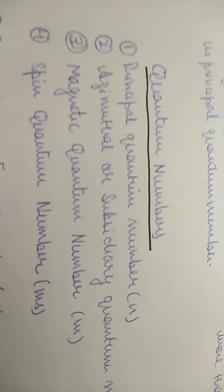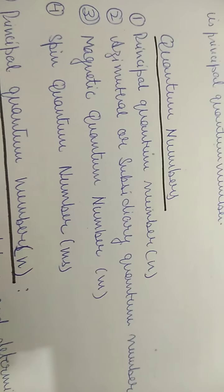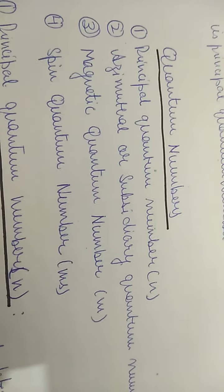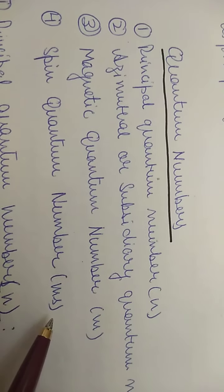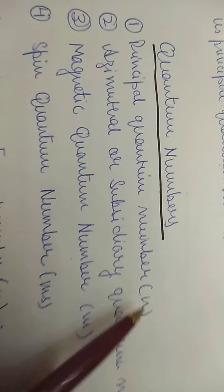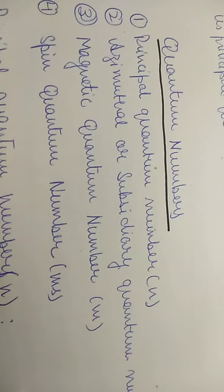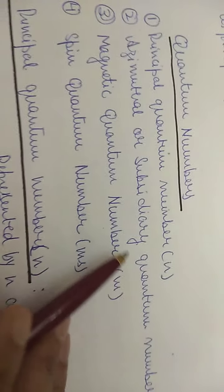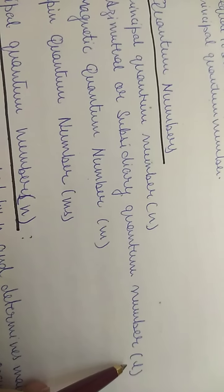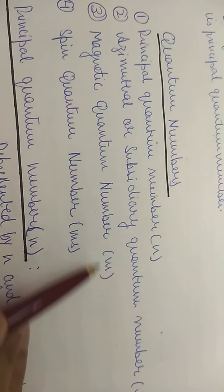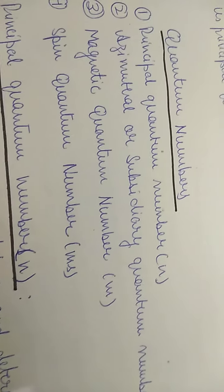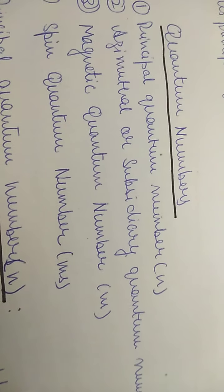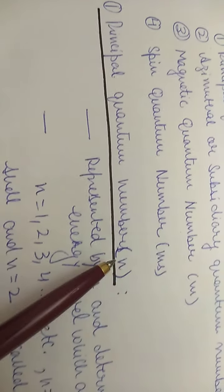When the Schrödinger wave equation is solved, we get wave functions and quantum numbers. We have 4 quantum numbers to define an electron: the principal quantum number (n), the azimuthal or subsidiary quantum number (L), the magnetic quantum number (M), and the spin quantum number (Ms). We will now go through each of these.